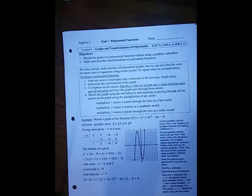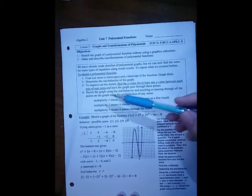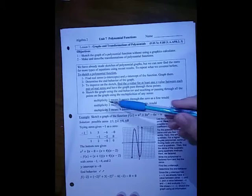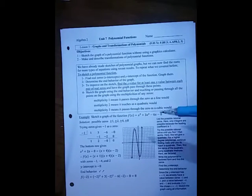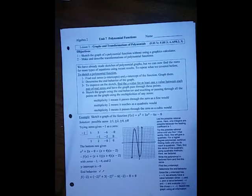But typically we'll pick integers to make it easier. But it should be somewhere between the zeros. And then I'll remind you that multiplicity, if it's there just once, it will pass through as a line, but multiplicity 2 means it will touch as a quadratic and then go back in the same direction.